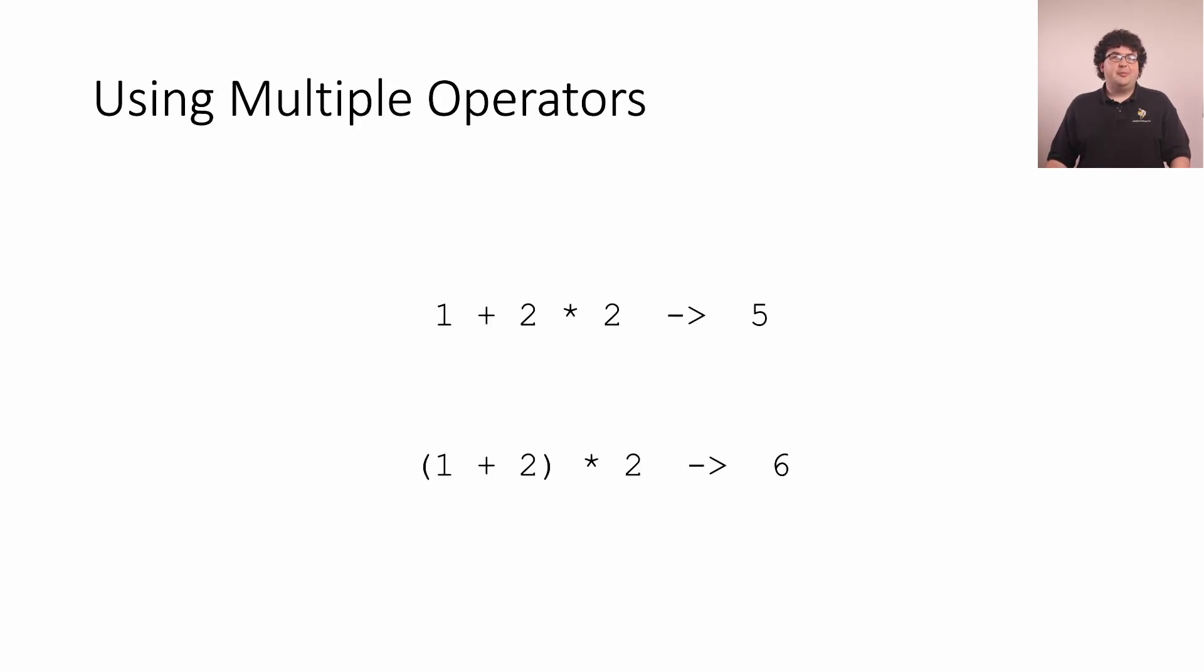Finally, it's important to know that we can chain multiple operators together. When an expression includes multiple operators, like this one, the operator precedence rules tell us which operators are evaluated first. For example, multiplication is ordered before addition, so the result of this expression is 5.